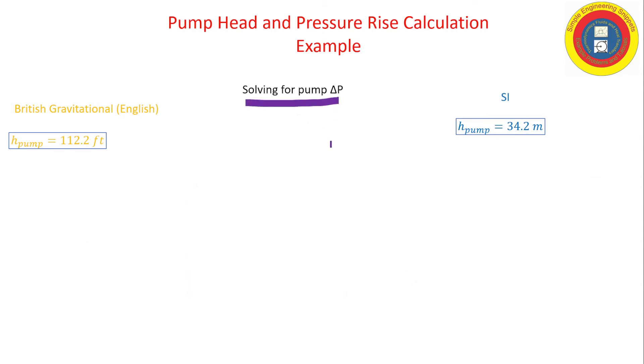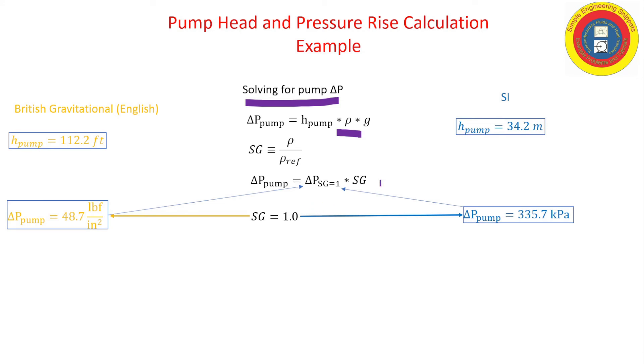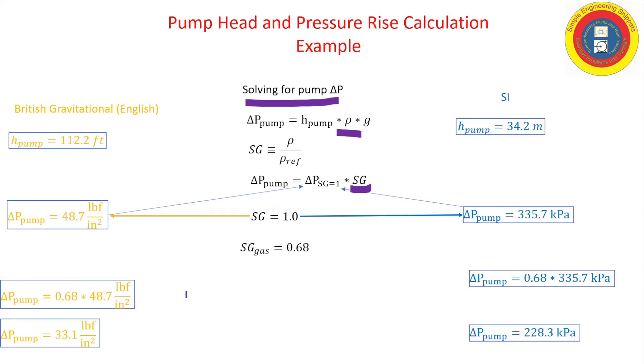Okay, so let's solve for the delta p. The procedure is as before; however, we've already done this once, and we know the specific gravity and the definition of specific gravity. So really, we can just scale the answer that we obtained for specific gravity equal to one and then just multiply it by the specific gravity to obtain the answer. So let's do that, and we obtain that the pressure rise across the pump in English is 33 psi and for SI, 228 kilopascals.